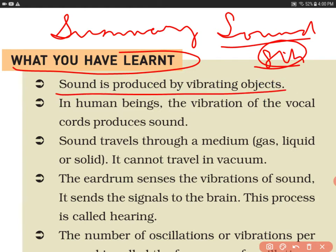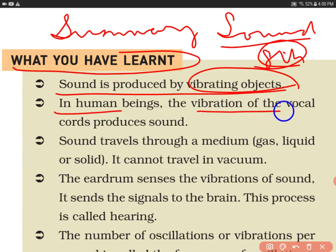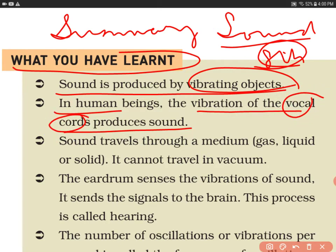Sound is produced by a vibrating body. Sound is always produced through a vibrating object. Vibrating objects produce sound. In human beings, the vibration of the vocal cord produces sound. Humans have the vocal cord, which we also call the voice box, and that is what produces the sound.